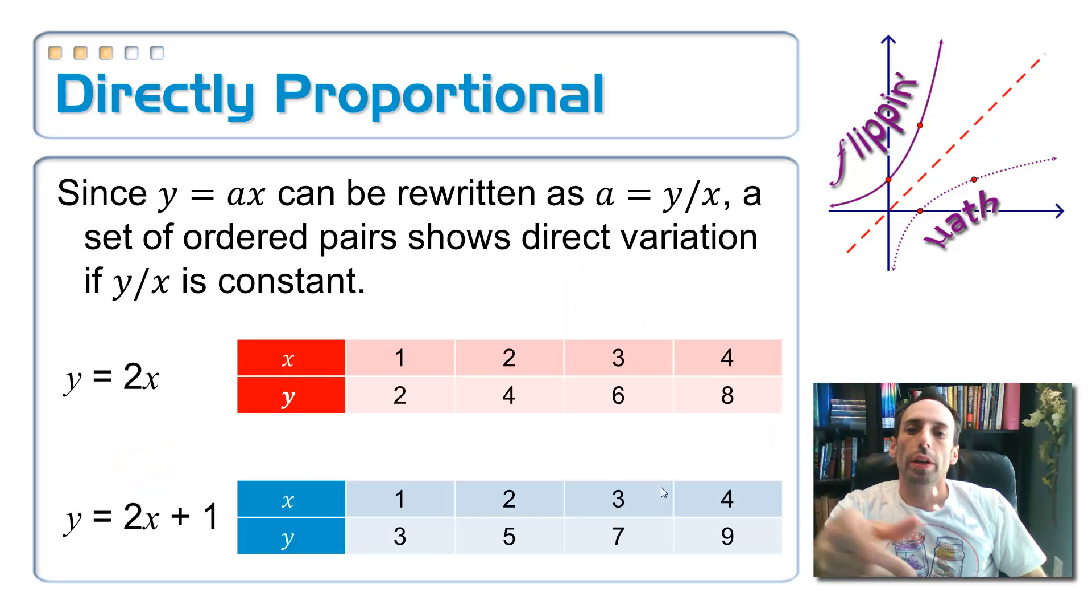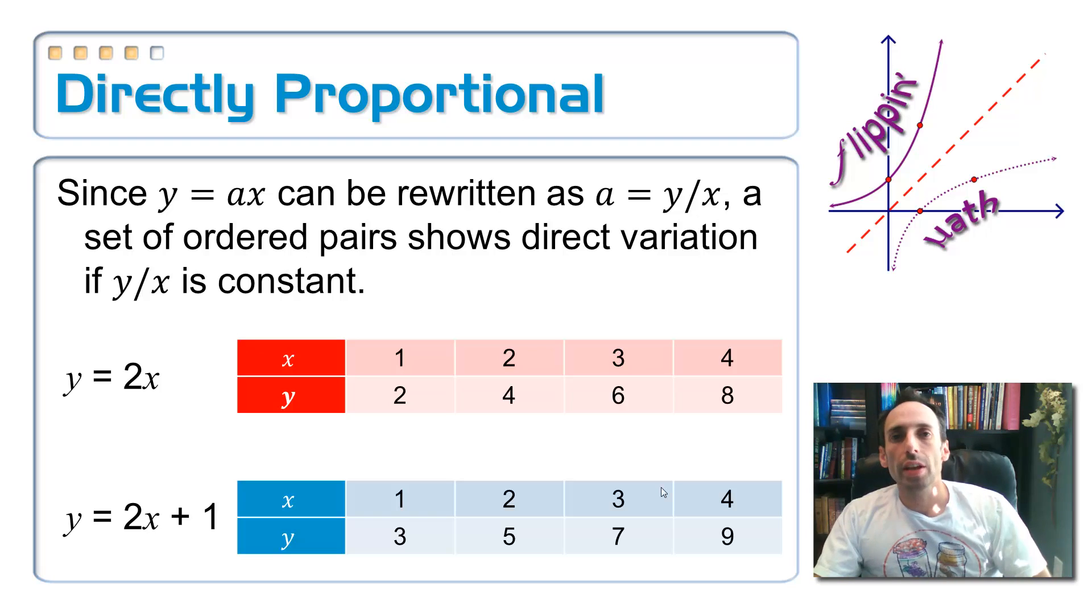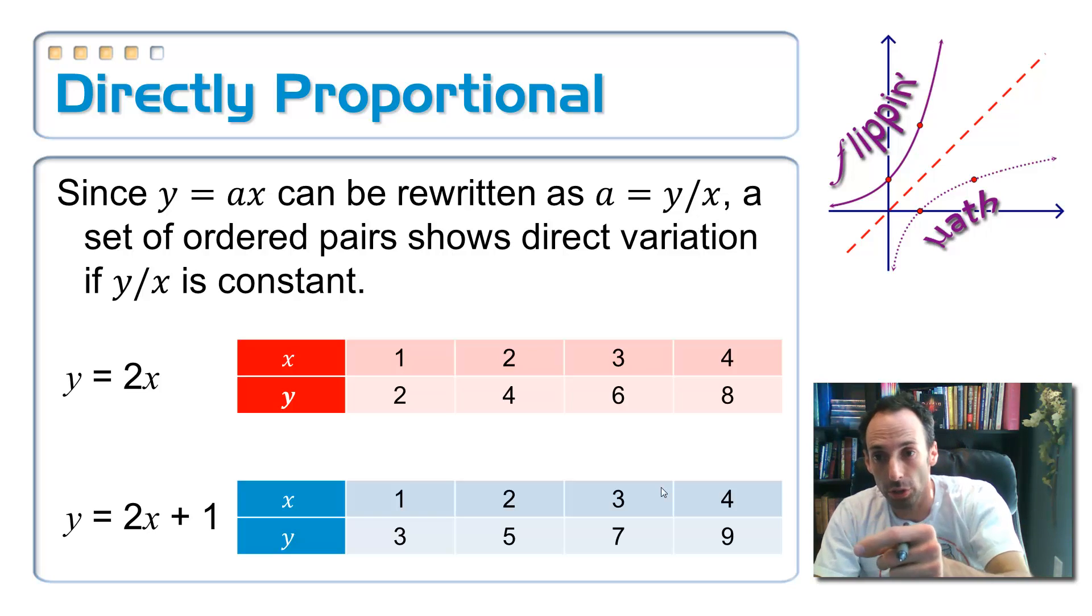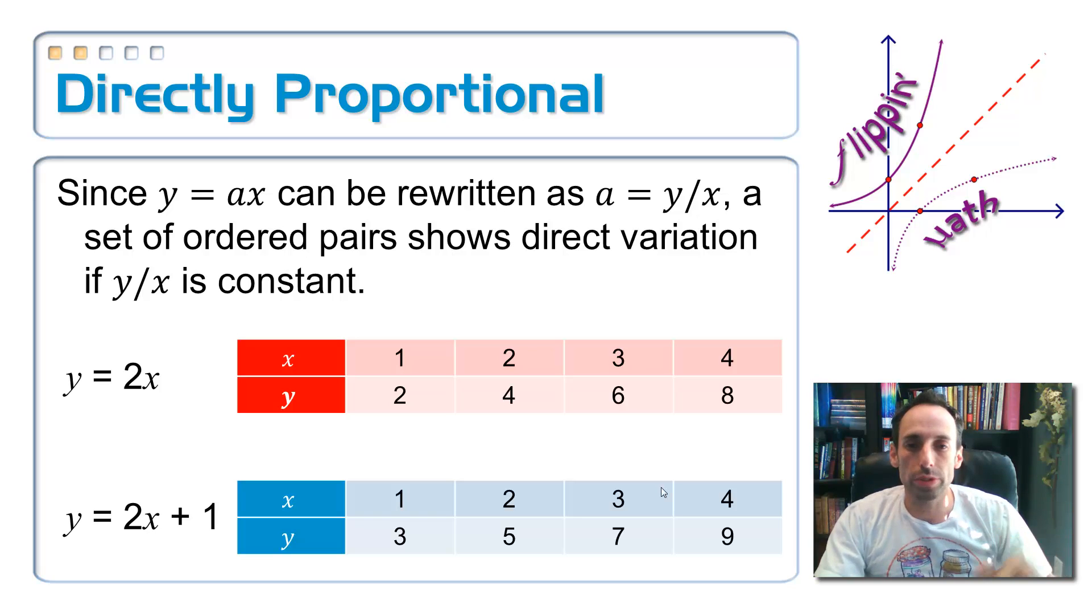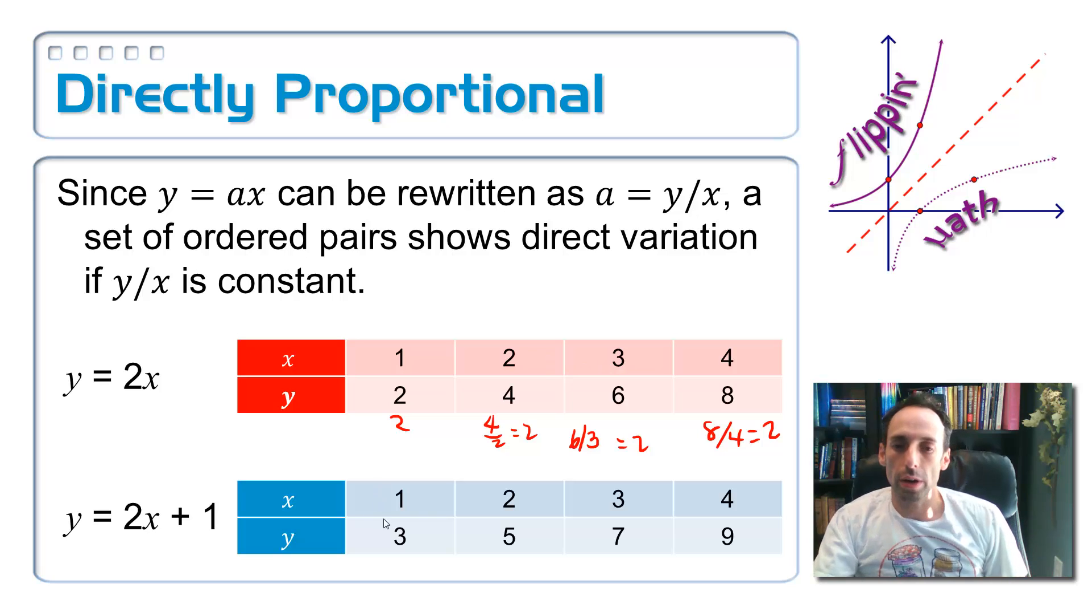Okay, so since y equals ax can be rewritten as a equals y divided by x, like what we were doing before, a set of ordered pairs shows direct variation if the y coordinates divided by the x coordinates stays constant. It's the constant of variation. So for example, in the red table there, we have some table of values for y equals 2x. The constant of variation is 2. That shows direct variation. Now look at the actual table values. If I divide 2 by 1, I get 2. If I divide 4 by 2, I get 2. If I divide 6 by 3, I get 2. If I divide 8 by 4, I also get 2. No matter what, I'd always get 2. It shows direct variation. It is directly proportional.